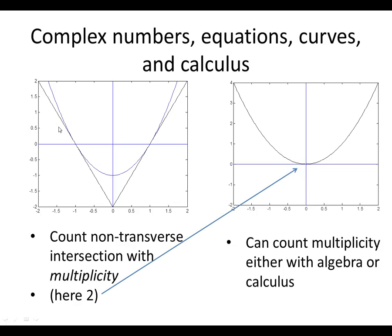So, what we do is we count any non-transverse intersection, something that doesn't look like this and looks like this, with a multiplicity. It turns out the correct multiplicity here is 2. If you take this curve and you just drag it down a tiny bit, this one intersection splits into 2. We'll talk about more when I talk about topology in a later part of this talk.